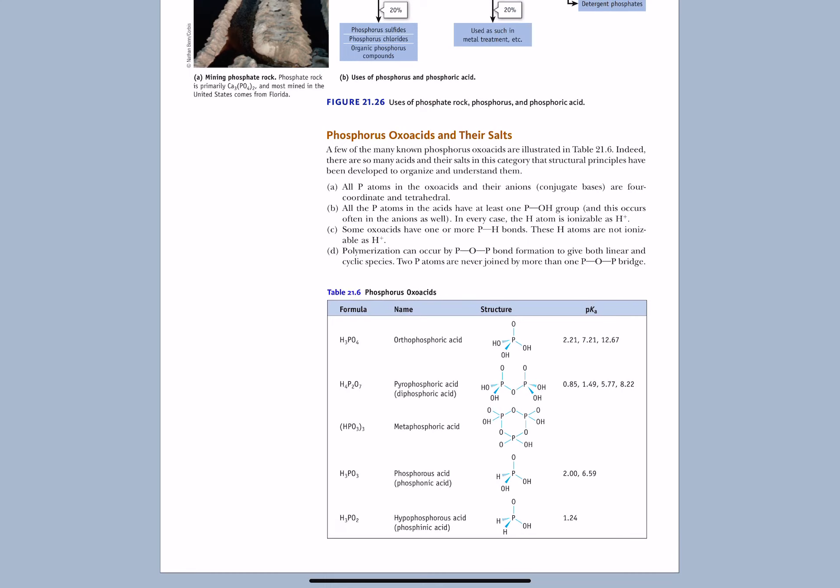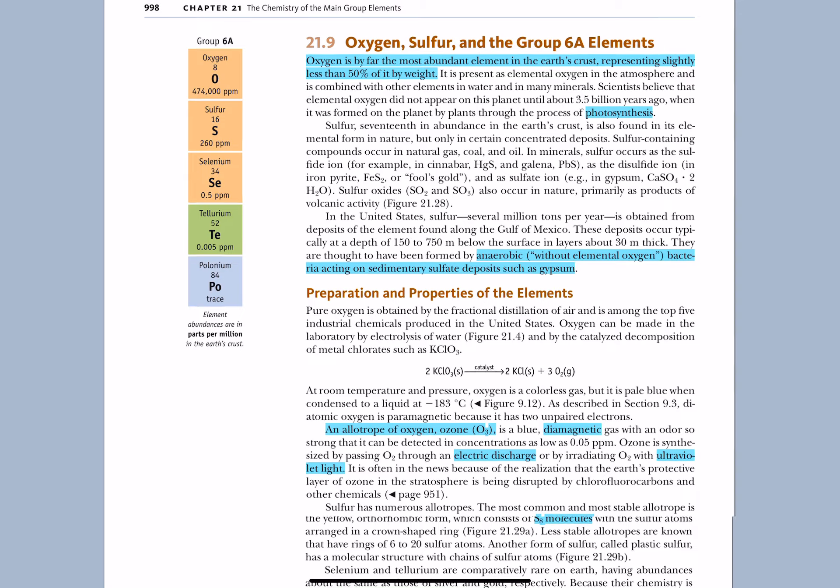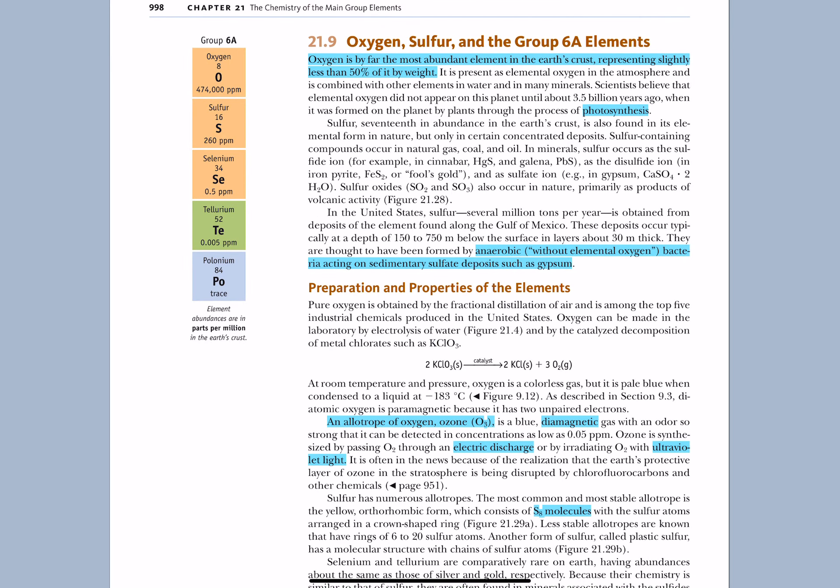All the different kinds of phosphate compounds, phosphorus oxo acids. Now we're up to the oxygen family. In biology you're going to learn an awful lot about photosynthesis. It's by far the most abundant element in the earth's crust, about 50% by weight.